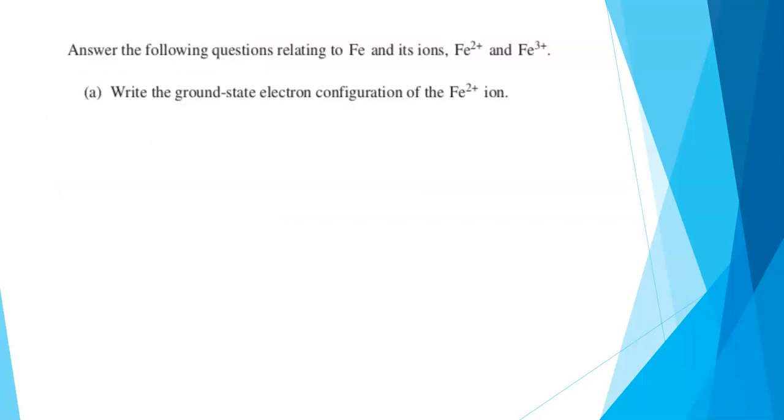So this question was about iron and its ions, iron 2 plus and iron 3 plus, those being the common two ions of iron. Part A: write the ground state electron configuration of Fe2+ ion. AP Chem students should know how to write electron configurations for neutral atoms and for ions. This question was scored out of one point, so it was pretty much all or nothing.